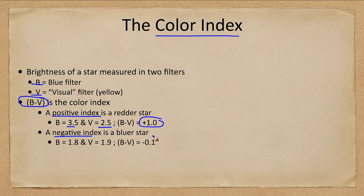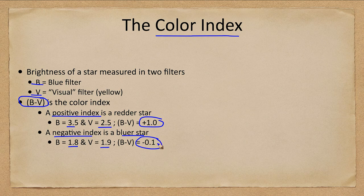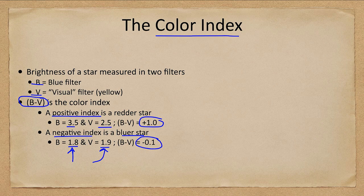A negative index tells you a bluer or hotter star. So if B is 1.8, V is 1.9, B minus V is negative 0.1, means that this is a very hot star. It is emitting more light in the blue portion of the spectrum than in the visual. And again, remember that magnitudes are measured backwards.